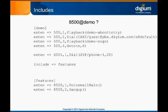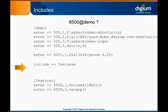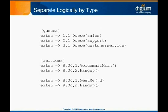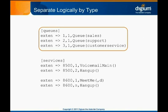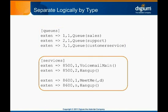Asterisk also provides a way for contexts to relate to each other via the use of includes. Adding an include directive in one context tells it that if it doesn't have a match for the dialed extension, it can look in the included context to see if there's a match. Examples and a deeper look at how includes work are offered in the intermediate dial plan chapter. Other common uses for contexts are to separate different IVRs, or to collect all the extensions of a certain type together — for example, a context called queues or a context called services, as shown here.